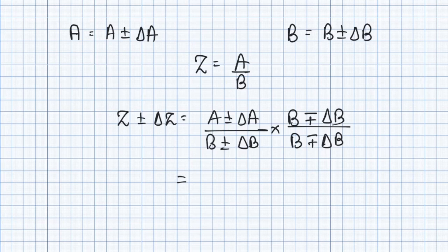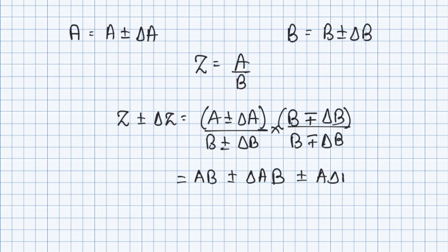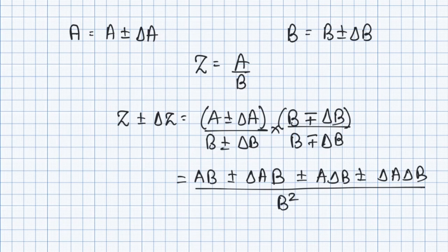In the numerator we have (a ± Δa)(b ± Δb), giving ab ± Δa·b ± a·Δb ± Δa·Δb. In the denominator we have b² − Δb², and that equals Z ± ΔZ.